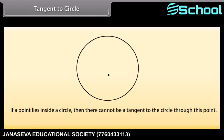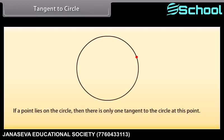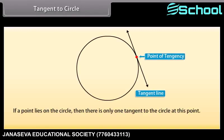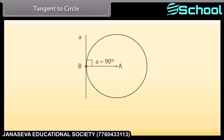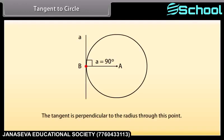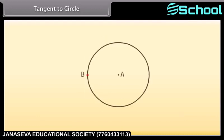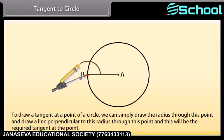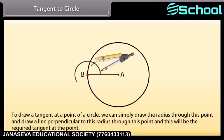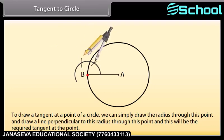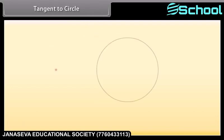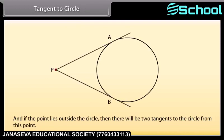Tangent to a circle: if a point lies inside a circle, then there cannot be a tangent to the circle through this point. If a point lies on the circle, then there is only one tangent to the circle at this point, and the tangent is perpendicular to the radius through this point. Therefore, to draw a tangent at a point of a circle, we simply draw the radius through this point and draw a line perpendicular to this radius — this will be the required tangent. If the point lies outside the circle, then there will be two tangents to the circle from this point.